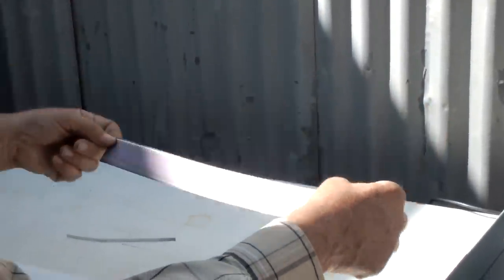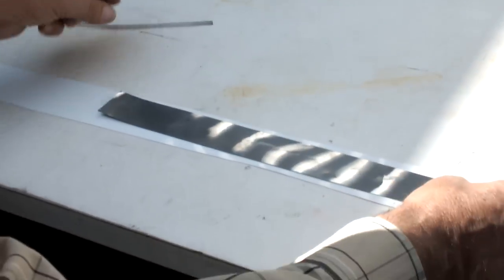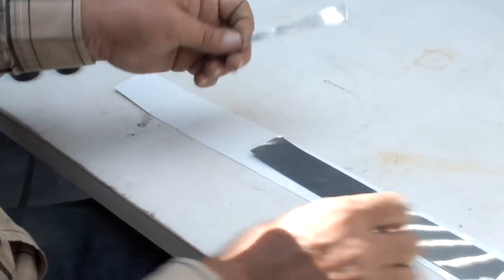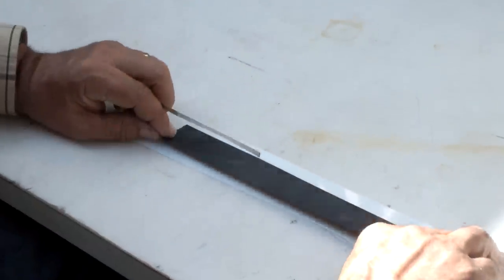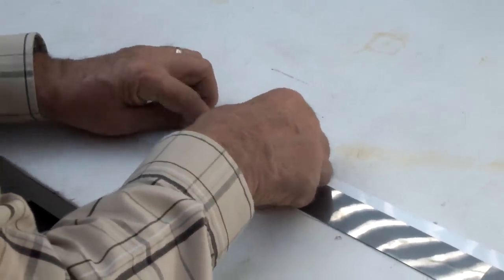First thing we do is turn it over and attach a wire, a tab, to the back of the cell.